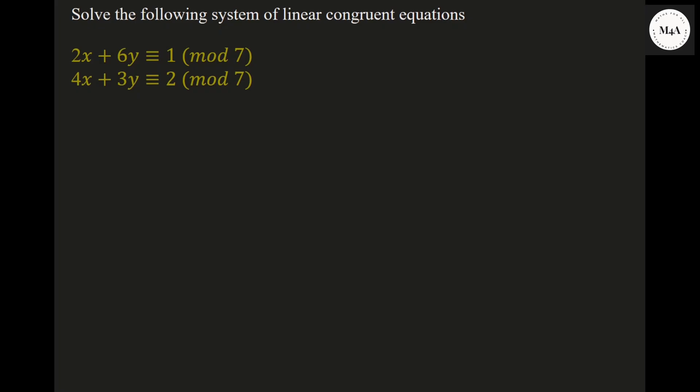Hello students, welcome to next class. In this class, I am going to discuss one more example on linear congruence equations — how to solve a given system of linear congruence equations. The equations are: 2x + 6y ≡ 1 (mod 7) and 4x + 3y ≡ 2 (mod 7).